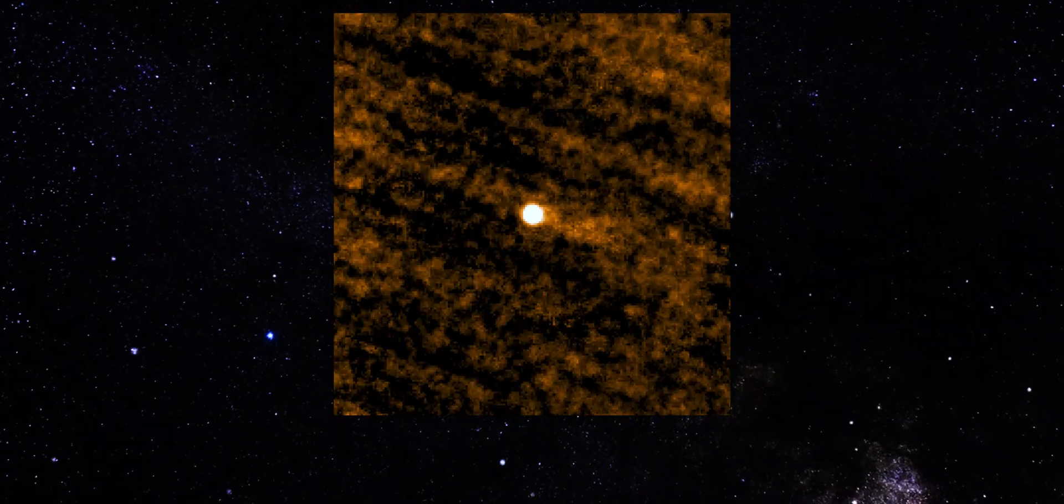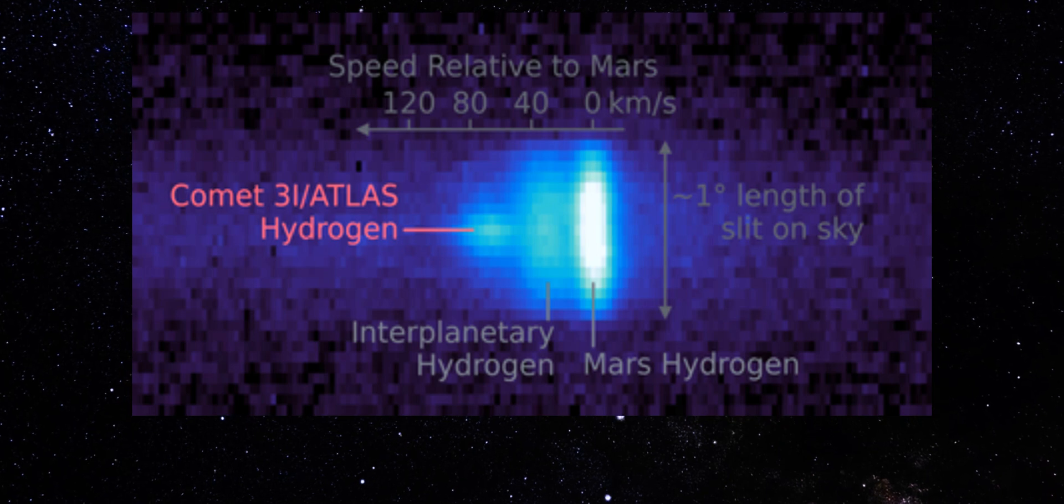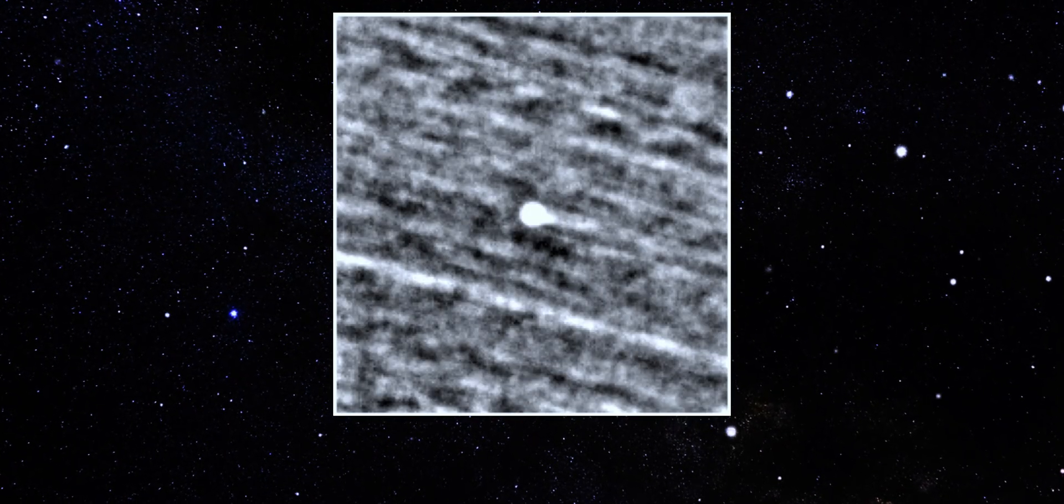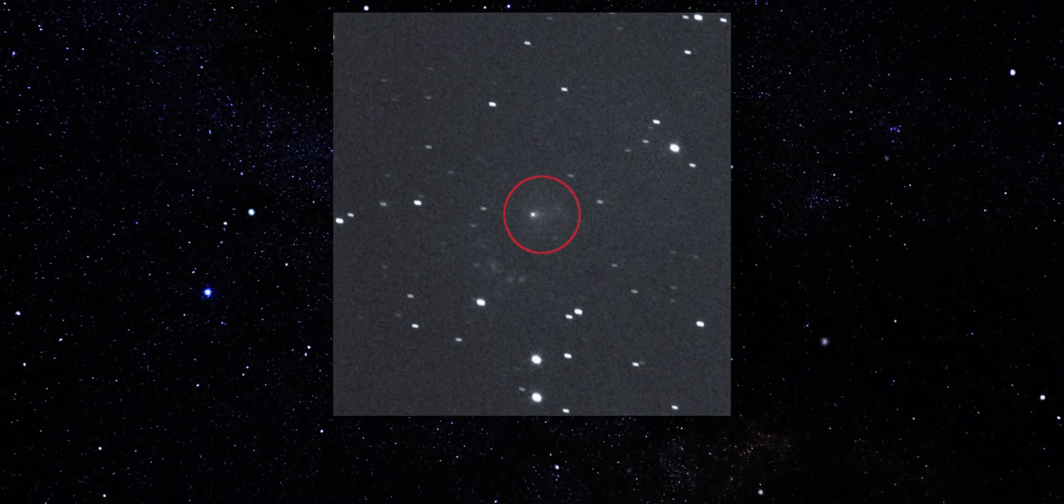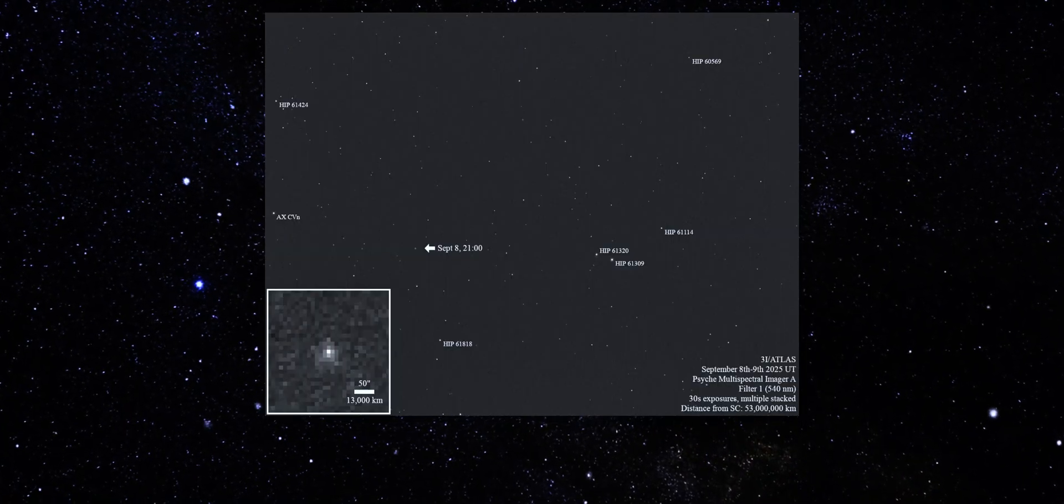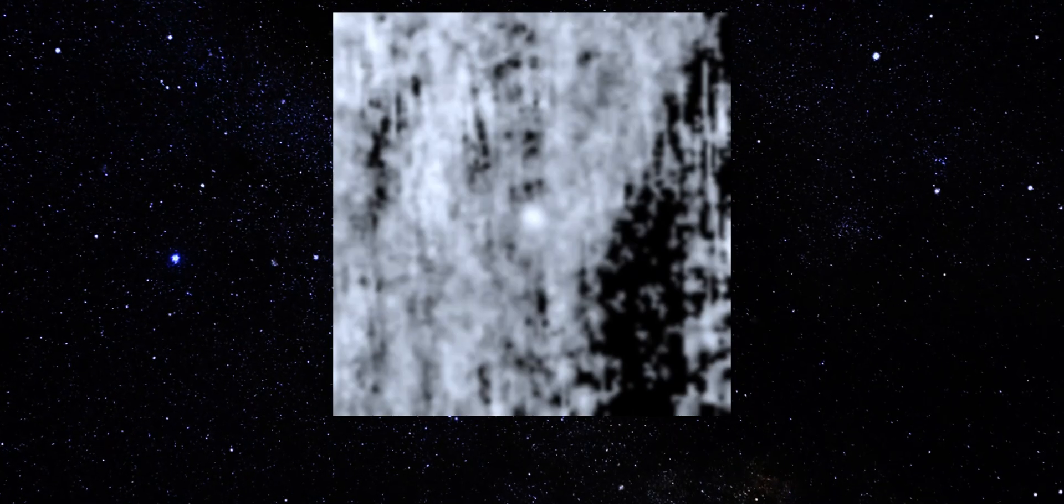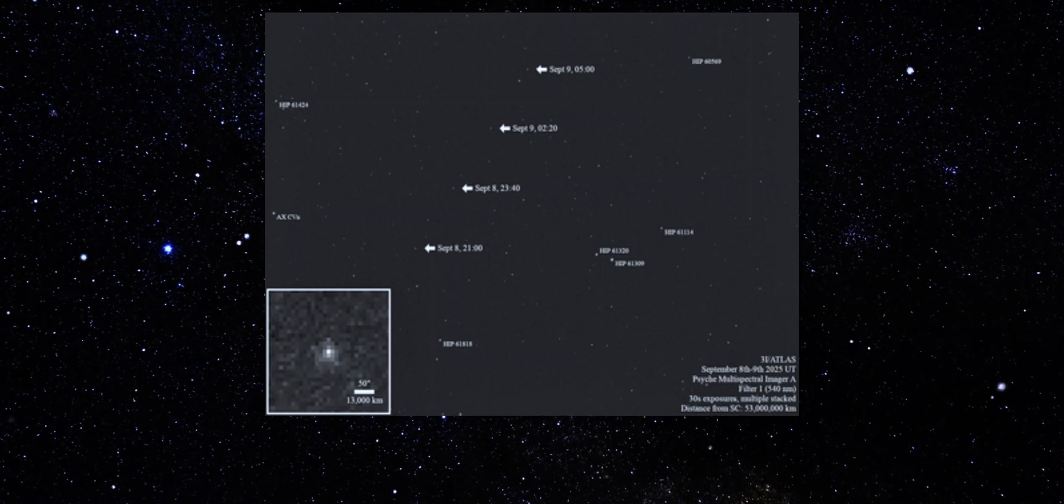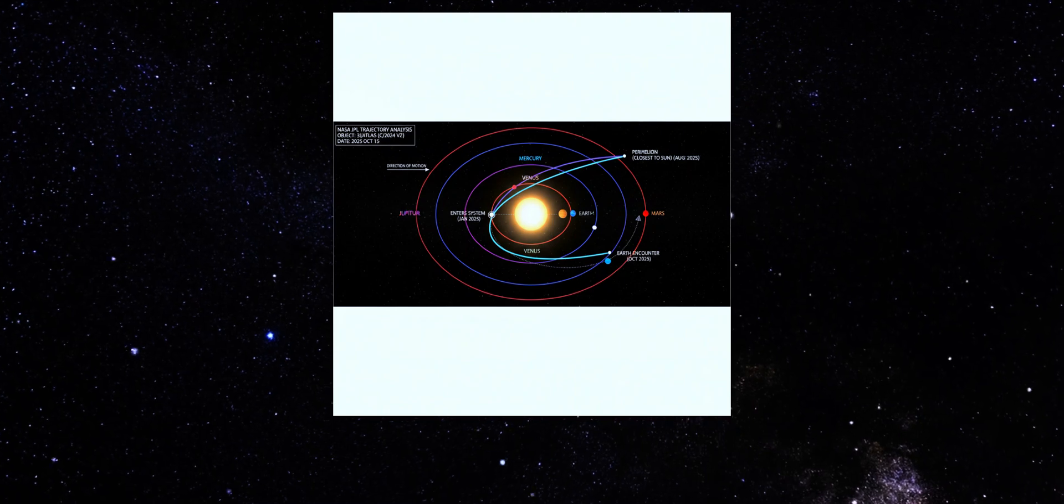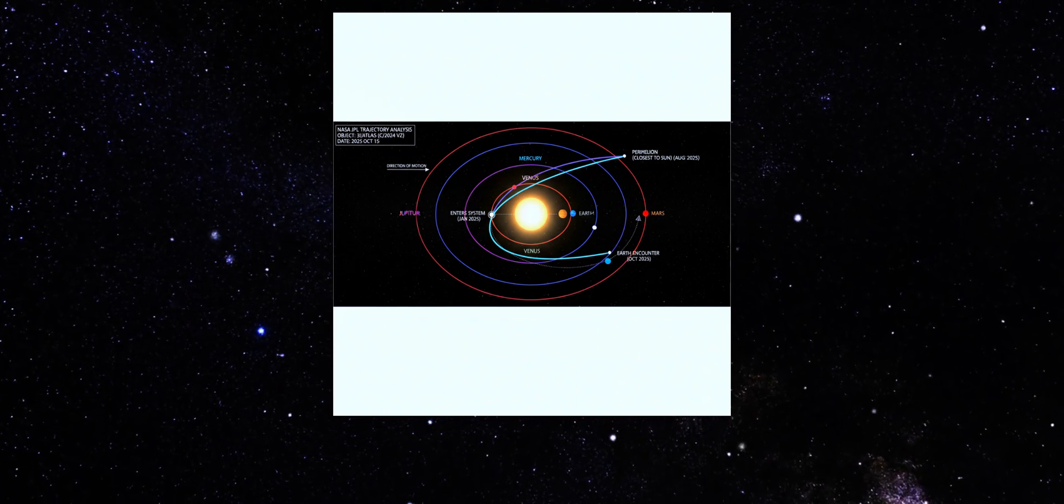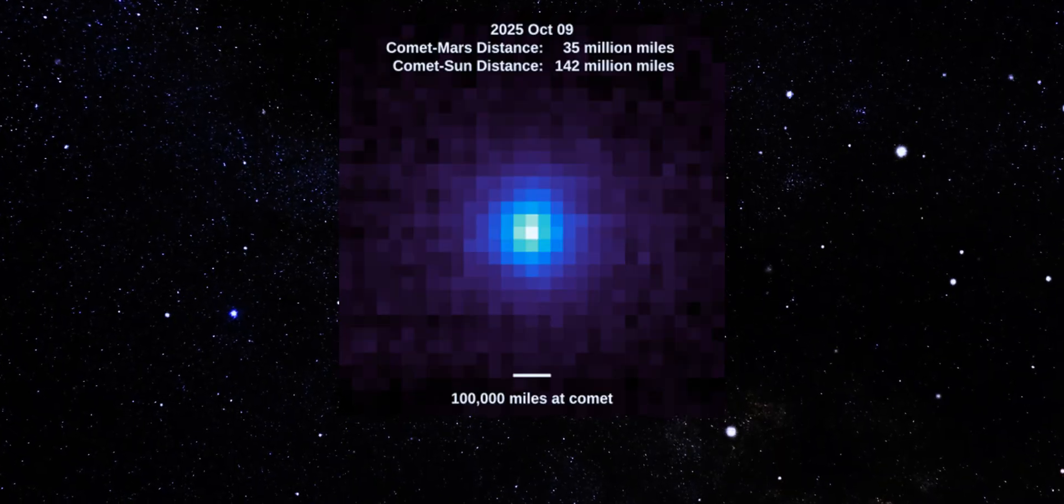Now let's frame today's behavior with real data. This comparison plot tracks the dust production activity of 3-Eye Atlas against two well-studied objects, 2-Eye Borisov and Comet C2020-F0 Neo-Wise. And the difference is dramatic. The orange curve belongs to 3-Eye Atlas. Its aft-row values sit far above both Borisov and Neo-Wise at equivalent distances from the sun. It's not just more active, it shows a much sharper rise and decline as it moves away from the sun. That means its dust output spikes hard and fades fast, exactly matching what the images are showing.